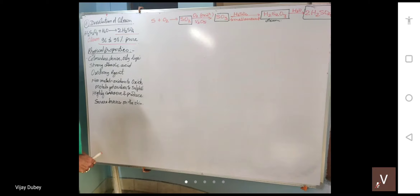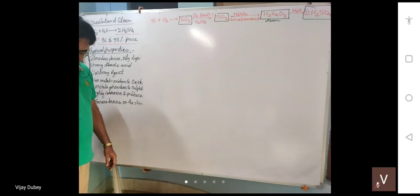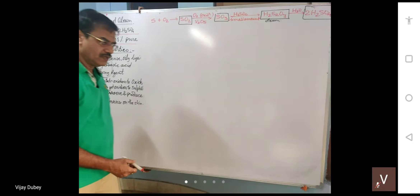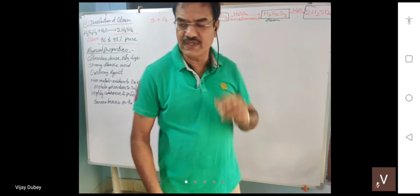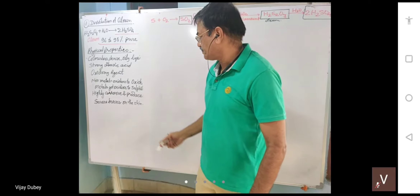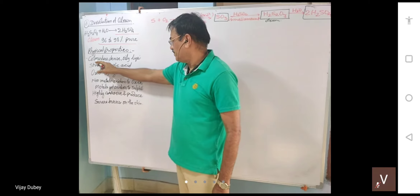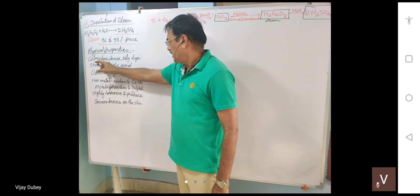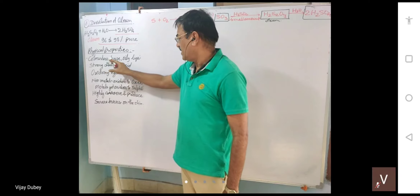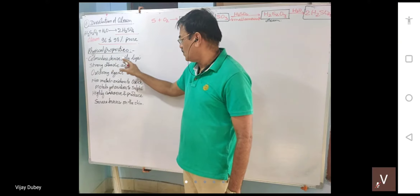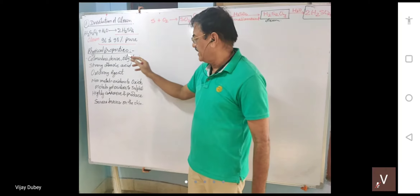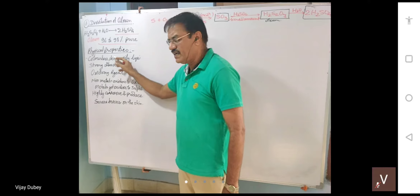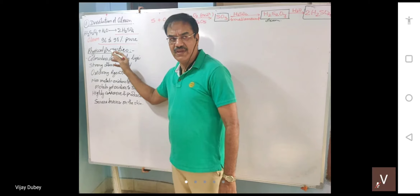Next are the physical properties of sulfuric acid. It is a colorless, dense, oily liquid. 'Dense' means it is very heavy — even a two-to-three litre can of sulfuric acid is quite heavy because a small volume contains a large mass.